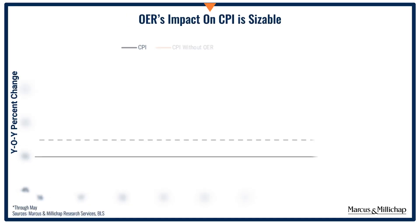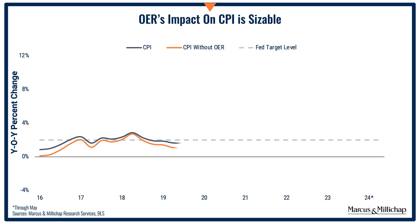Now, some economists are advocating that we stop using owner's equivalent rent in the inflation measurement. And if that were done, the current CPI inflation rate would be about 2.4% instead of the current reading of 3.3%.